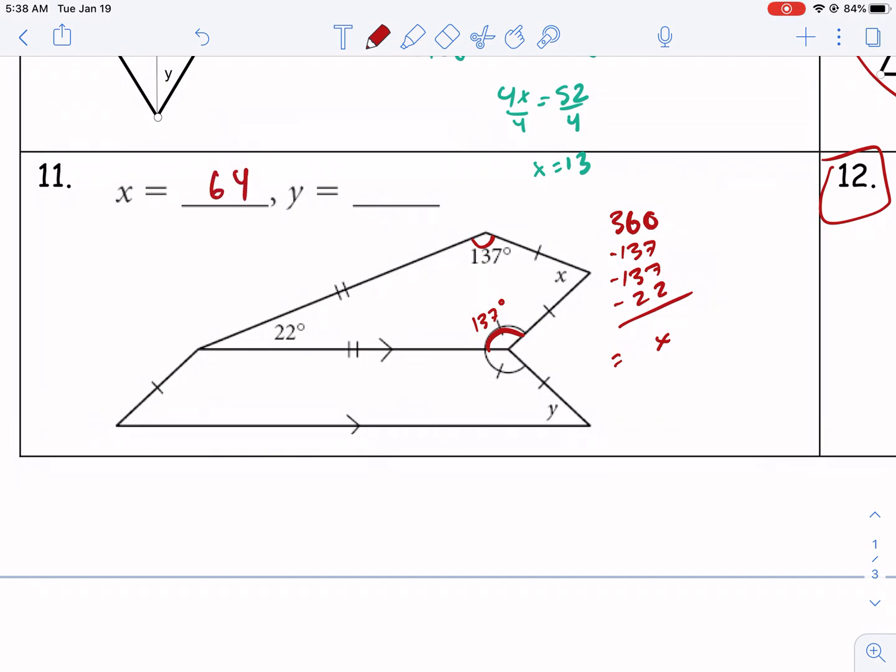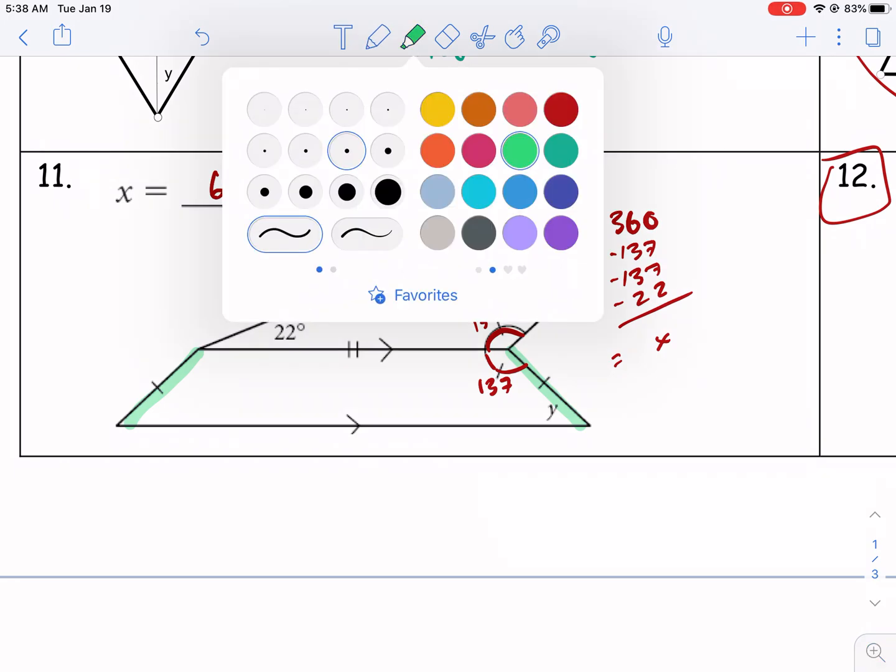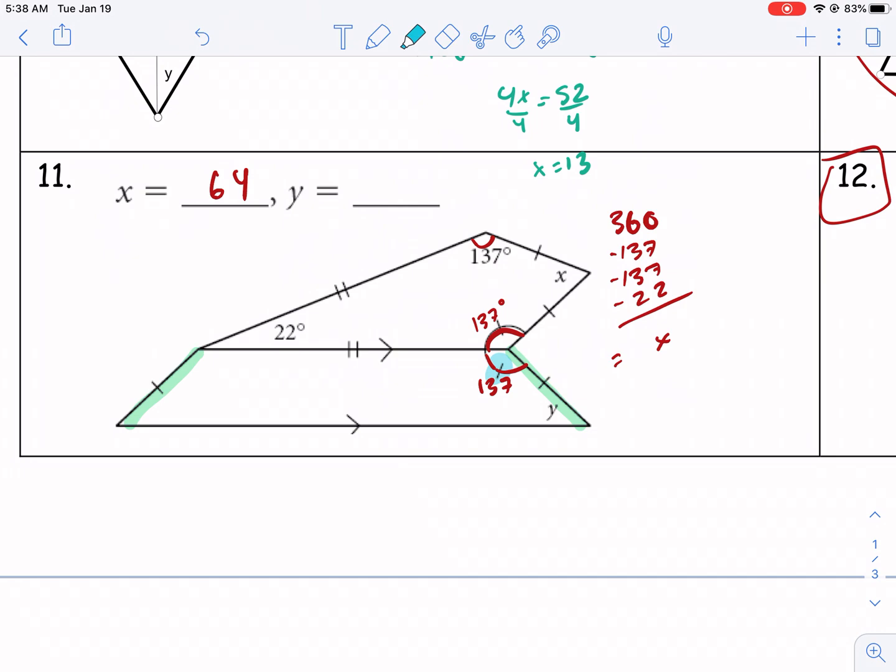And then this is a cool problem because we have to find y also. With this isosceles trapezoid, what makes it isosceles? It has two congruent legs. So then this is 137 also. I guess it doesn't even matter that it's isosceles because we know that these two angles, 137 and y, are supplementary because of these parallel lines here. So we have 137 plus y equals 180. And we just solve for y. 180 minus 137, and we get 43 degrees. And that's all there is to it.